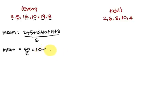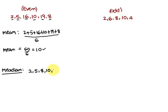Next, we find the median of these numbers. To find the median, you always first write all six numbers in ascending order: 2, 5, 8, 10, 16, 19. The word 'median' itself implies a midpoint, so we have to find the middle number.